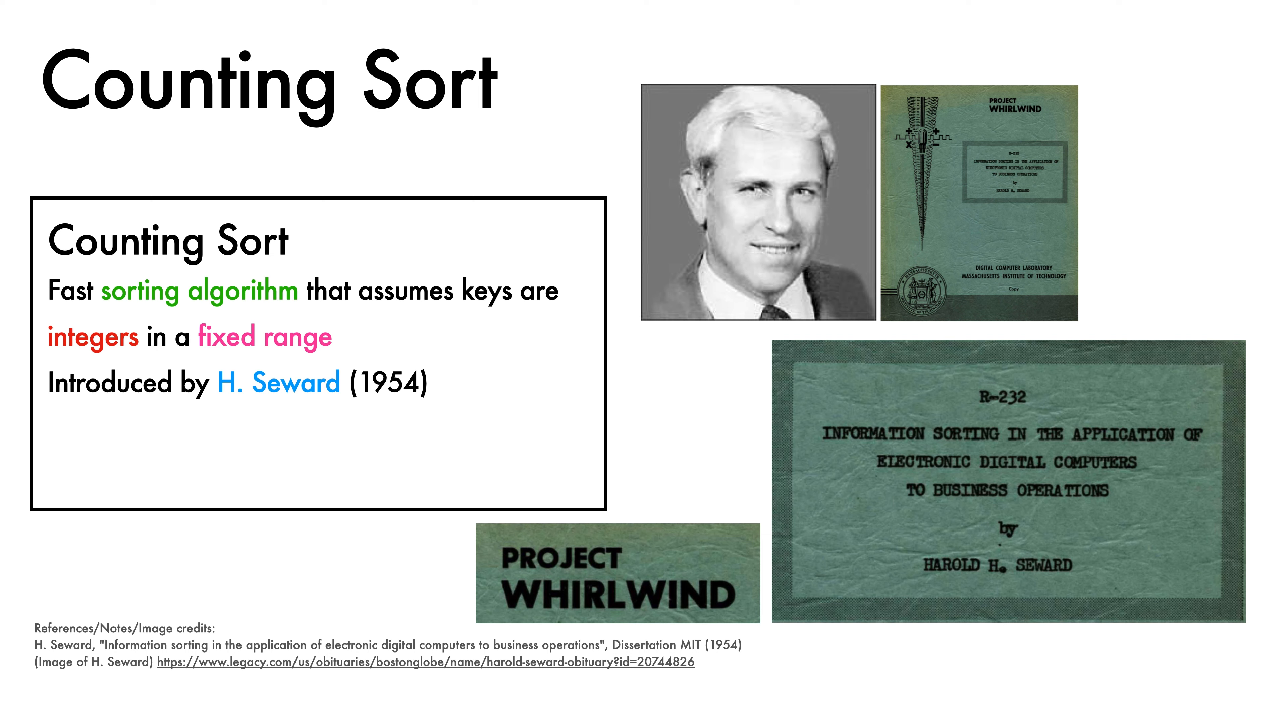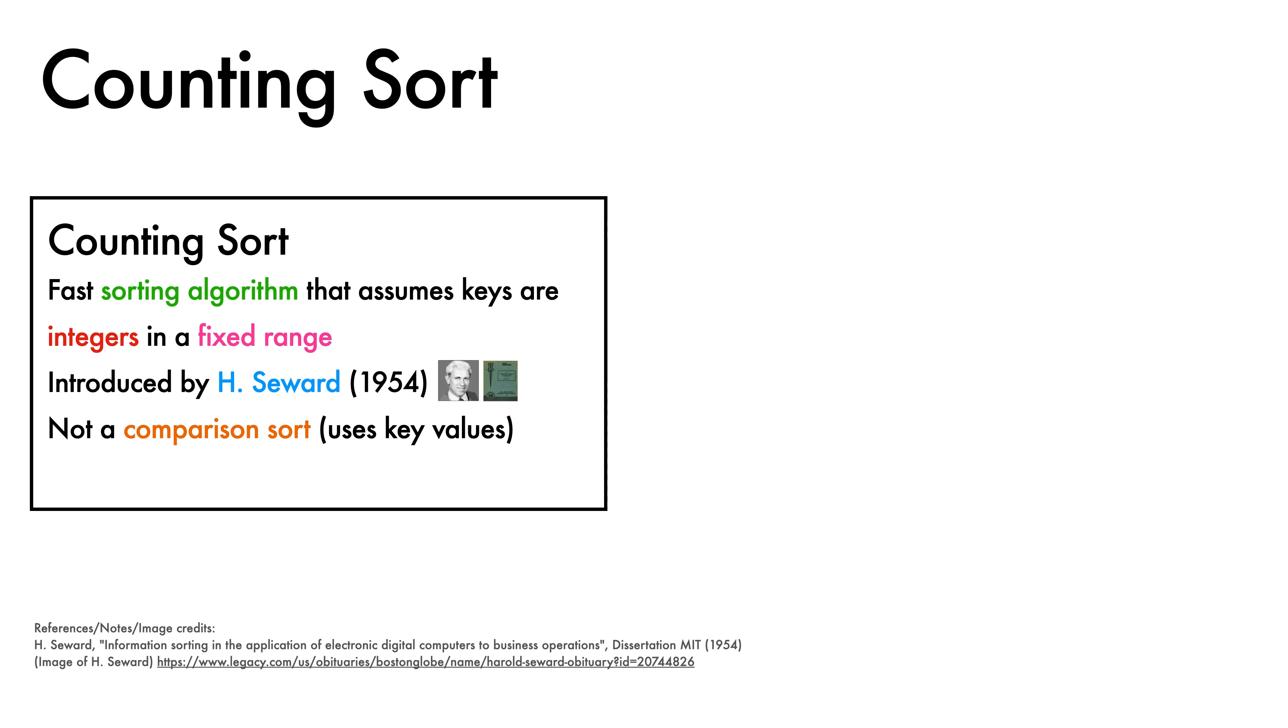Counting Sort is an algorithm that is not a comparison sort. It uses key values directly rather than comparisons between keys. It is also stable. It preserves the order of repeated elements.